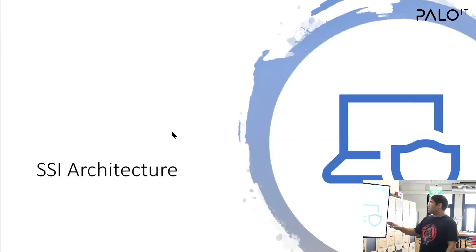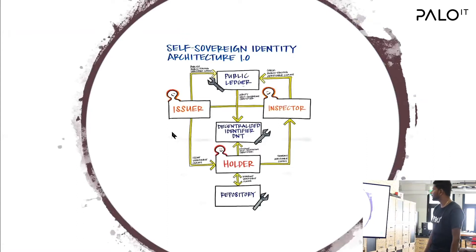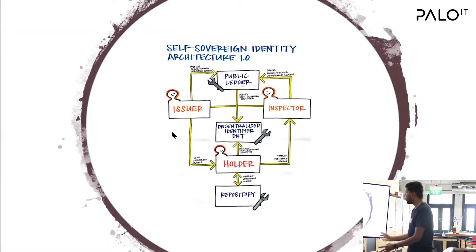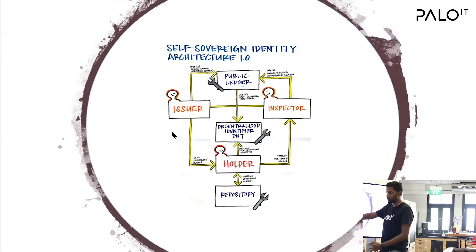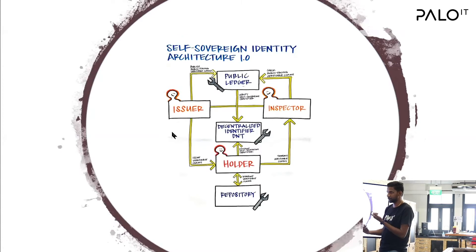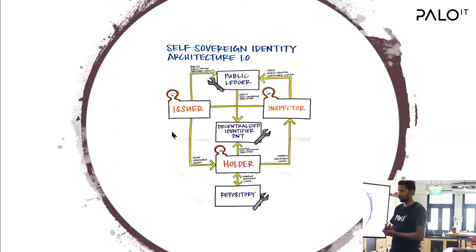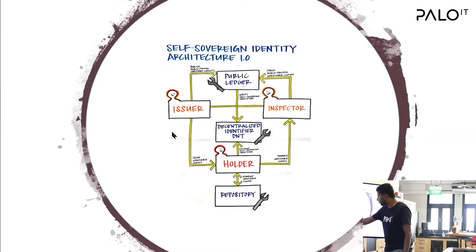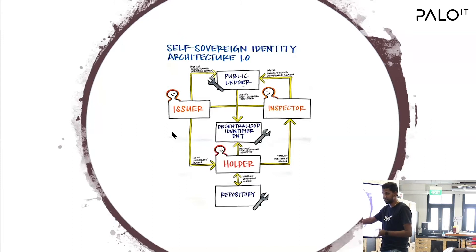Now a basic SSI architecture. The holder is the user — the one who holds the data. The issuer is the one with issuing authority, for example government agencies who issue digital credentials. The verifier, or inspector, is the one who verifies — for example, banks or insurance agencies who request employment proof or address proof. These are digital credentials. The repository is a very important part — this is where all user data stays. It's basically a digitally encrypted wallet where all credentials are stored, and it is with us, not anywhere on the cloud.